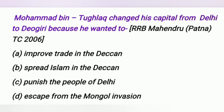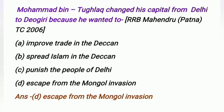Muhammad bin Tughlaq changed his capital from Delhi to Daulatabad (Daugiri) because he wanted to: A. Improve trade in Deccan, B. Spread Islam in Deccan, C. Punish the people of Delhi, D. Escape from Mongol invasion. The answer is Escape from Mongol invasion.